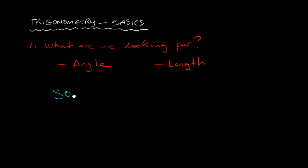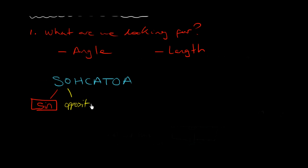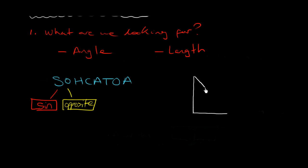In most schools they call it SOHCAHTOA, to remember the formulas and when to use each one. Each of these letters has one meaning. The S stands for sine, which you should find as a key on your calculator. The O stands for opposite — there isn't a key on your calculator that says opposite, because that refers to the particular triangle we're looking at. I'm going to draw one here as an example.